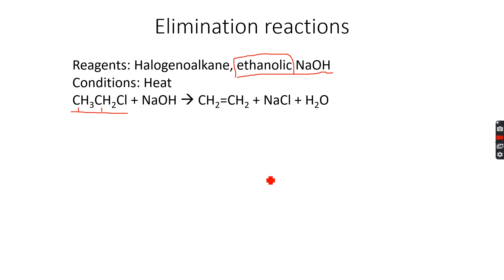You have to remember this condition because as we will see further, the moment you change this ethanolic to aqueous, a very different reaction takes place. Not elimination in that case, a substitution reaction takes place. We will be looking at that further in the presentation. But for now, everything that you need to know is that for elimination reactions, you always use ethanolic NaOH and the main product is the alkene from the halogenoalkane.